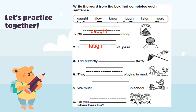Number two: 'I ___ at jokes.' What is the kid doing at the jokes? Laugh! Can you show me how you laugh? Thank you, I heard you laughing. Number three: 'The butterfly ___ away.' The butterfly flew away — can you see the butterfly? It flew away.